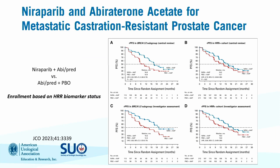For niraparib and abiraterone, this is a phase three randomized double-blind trial with the control arm of abiraterone plus placebo. Patients in the hormone-sensitive state could have received novel hormonal therapy. Also enrolled were M0 CRPC patients, but no one in the M1 CRPC space had received primary therapy — so this is primary treatment for them. We see improvements in radiographic progression-free survival particularly for BRCA1/2-mutated patients, and improvements in any HRR-mutated patients, but in non-mutated patients there was no benefit to the combination.